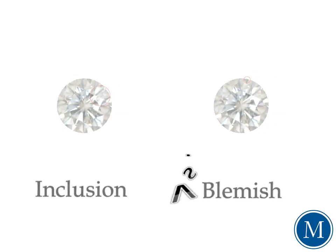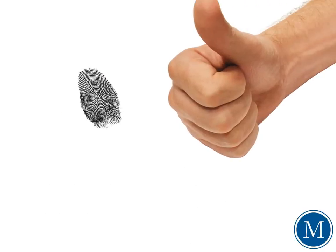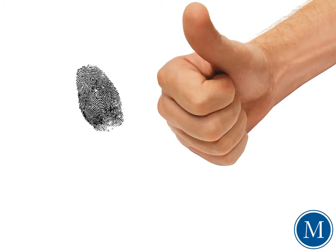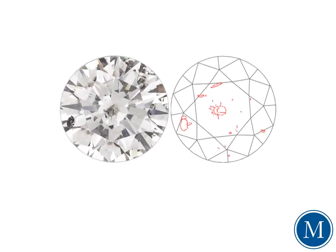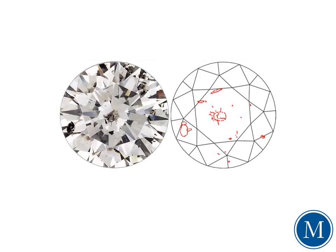Now, because all diamonds are unique in their flaws, inclusions are often referred to as nature's fingerprint, and are often mapped out on something called a diamond plot. These tiny imperfections help distinguish one diamond from another, since only the rarest of all diamonds are flawless.